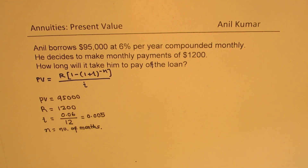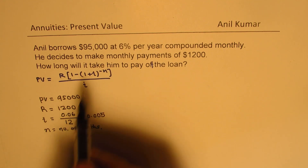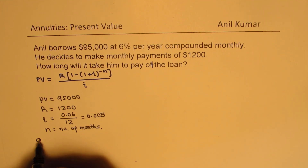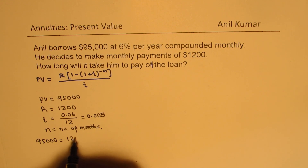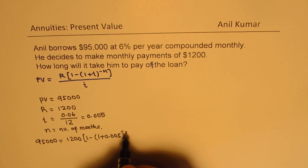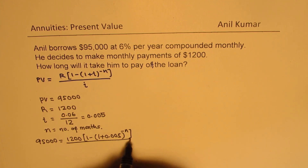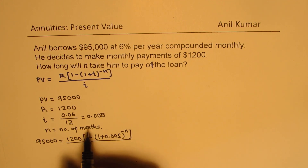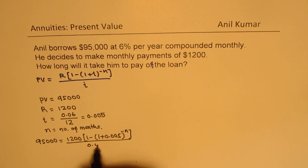Let's substitute all these values in the formula. We have 95,000 equals 1,200 times [1 minus (1 plus 0.005) to the power of minus n] over 0.005. Now n is the number which we need to find — the number of months — and the interest here is 0.005.